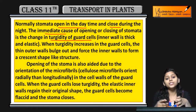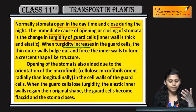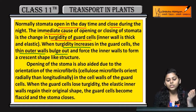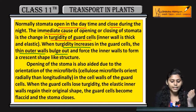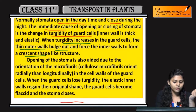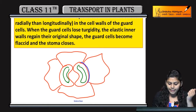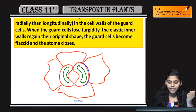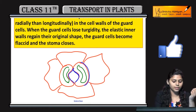Jab turgidity bada jaati hai — turgor pressure bada hota hai guard cells mein — to jo thin outer walls hain, they burst out and force karti hain inner walls ko ki woh crescent shape like structure banayen. Jo outer layer hai woh bulge karti hai bahar ki taraf, aur inner layer crescent shape like structure banati hai.